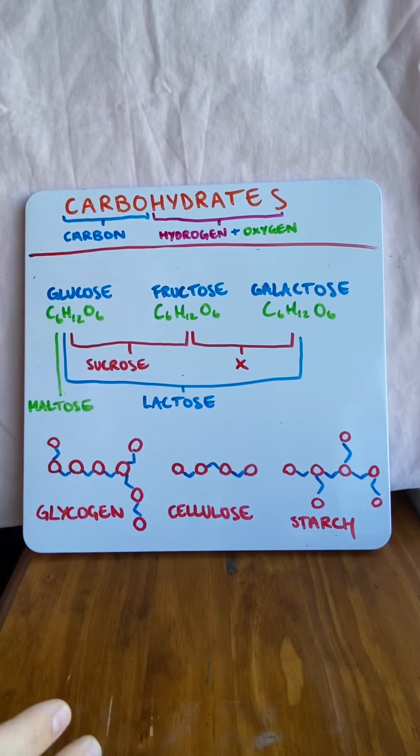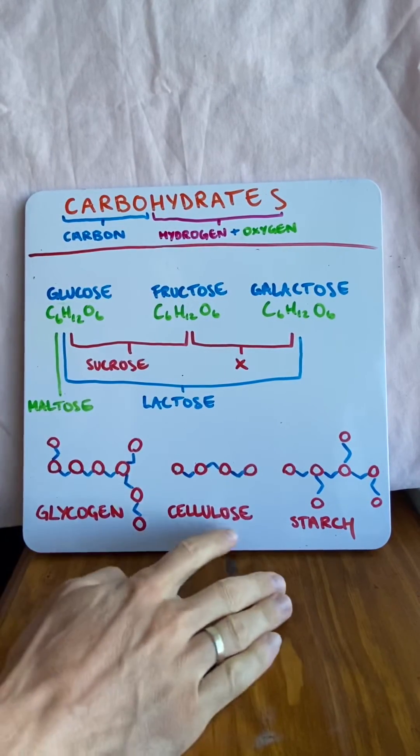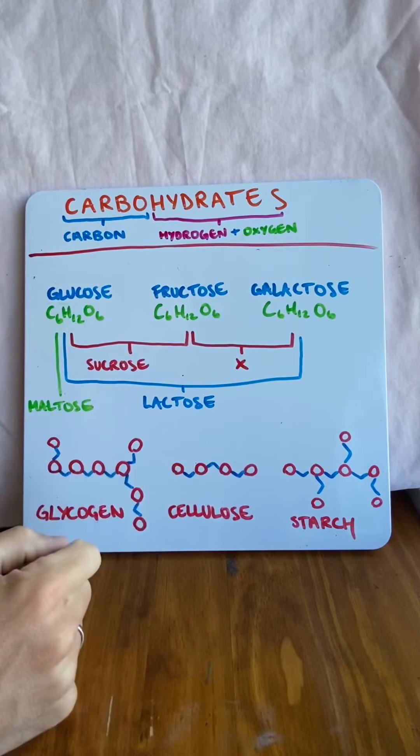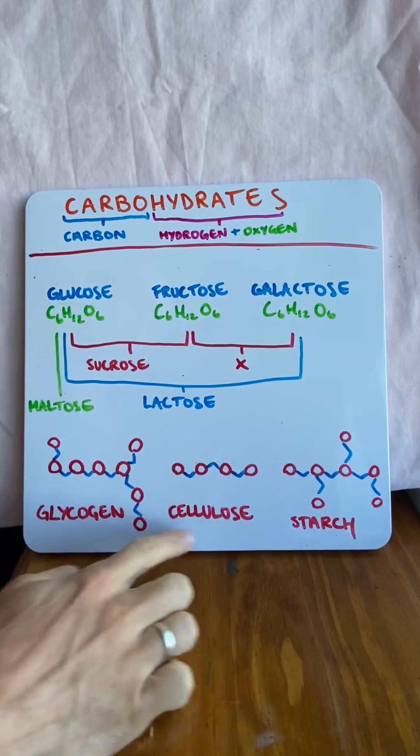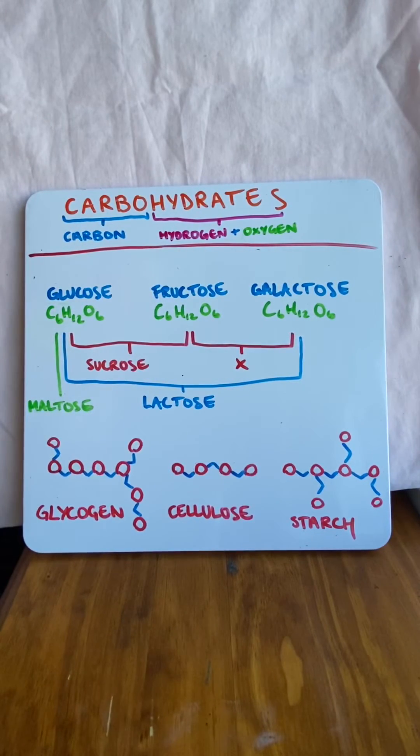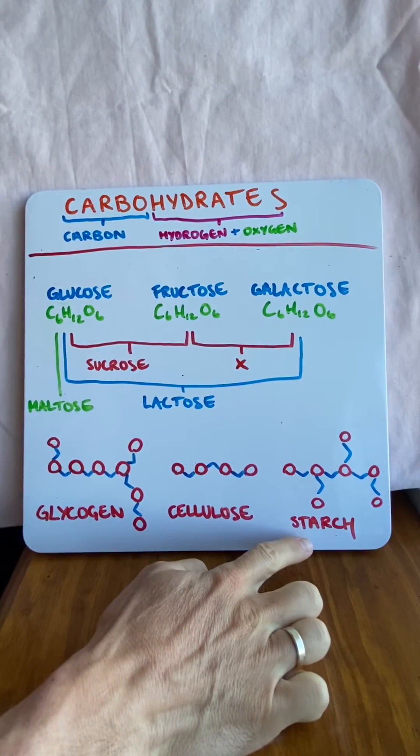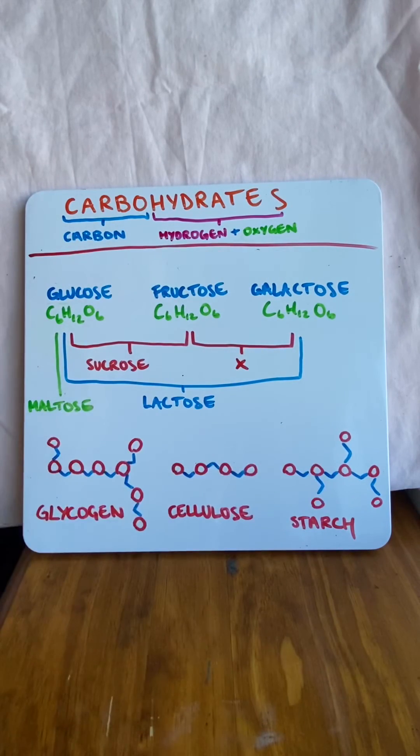Plants will store glucose in the form of cellulose and starch. Now cellulose, you can see that the bonds alternate. And the alternating bonds we can't break. So we can't actually utilize the sugar in cellulose. This is what's in grass, for example. But starch, we can because all the bonds go in the same direction and we can break it.